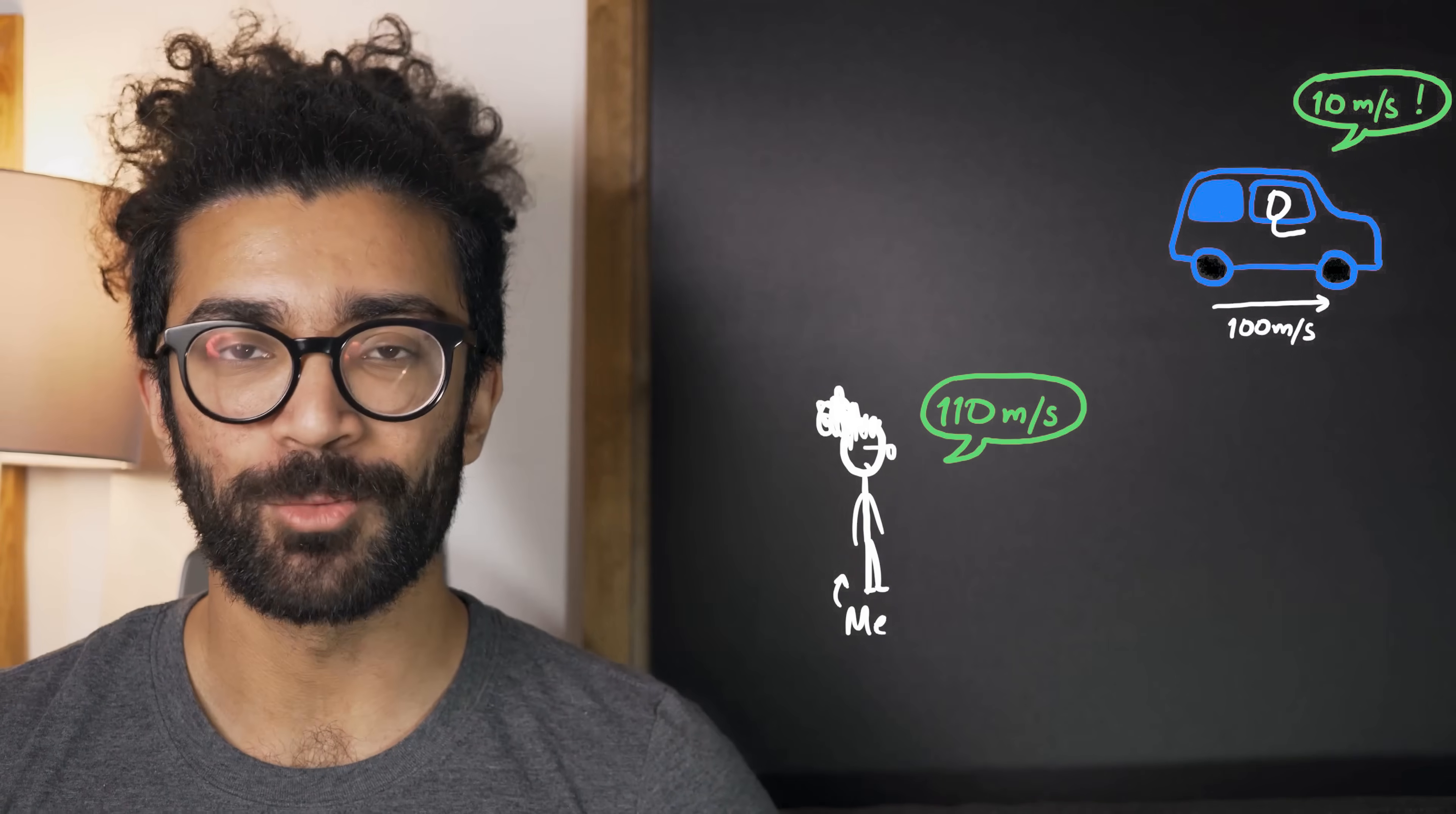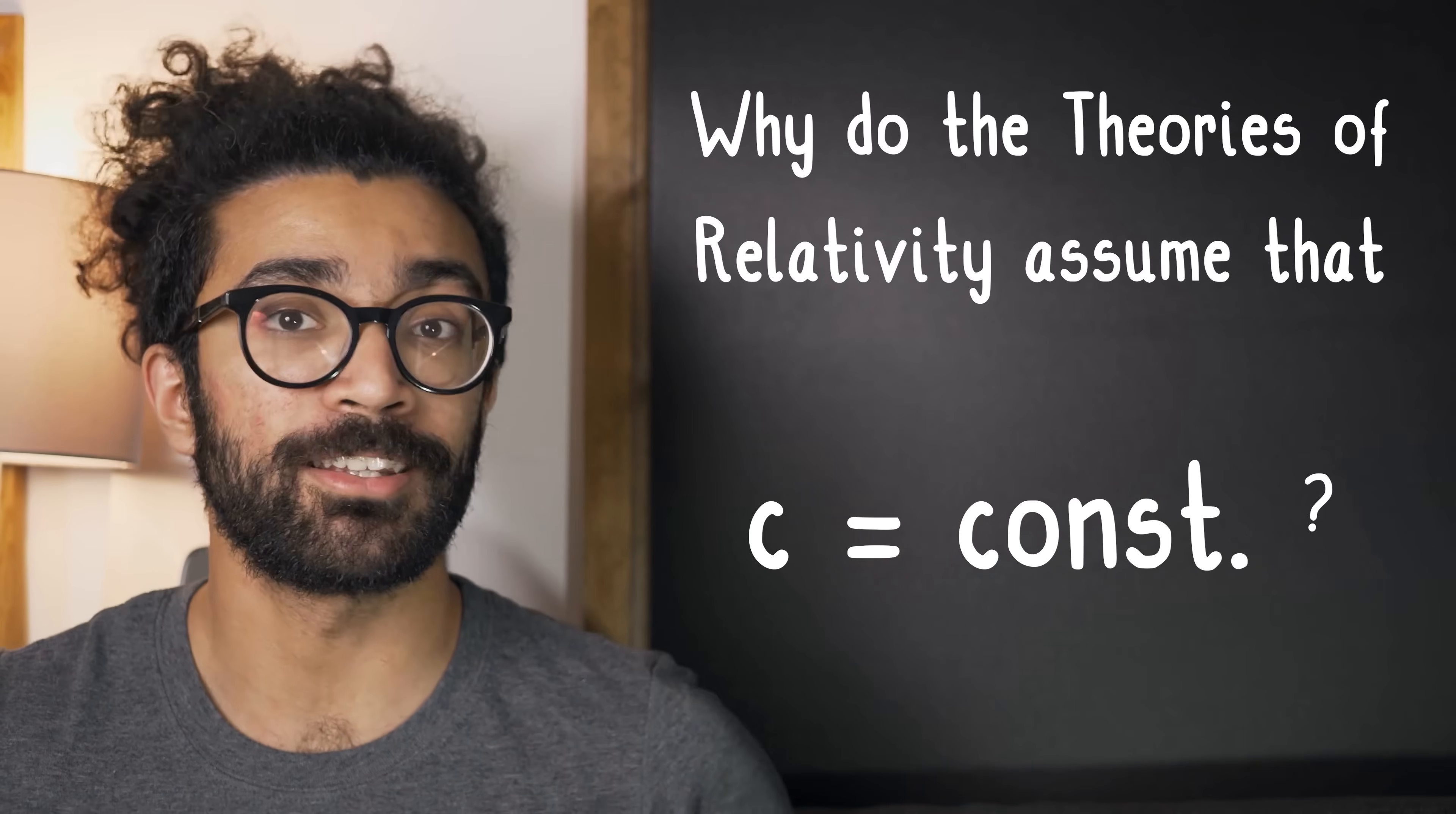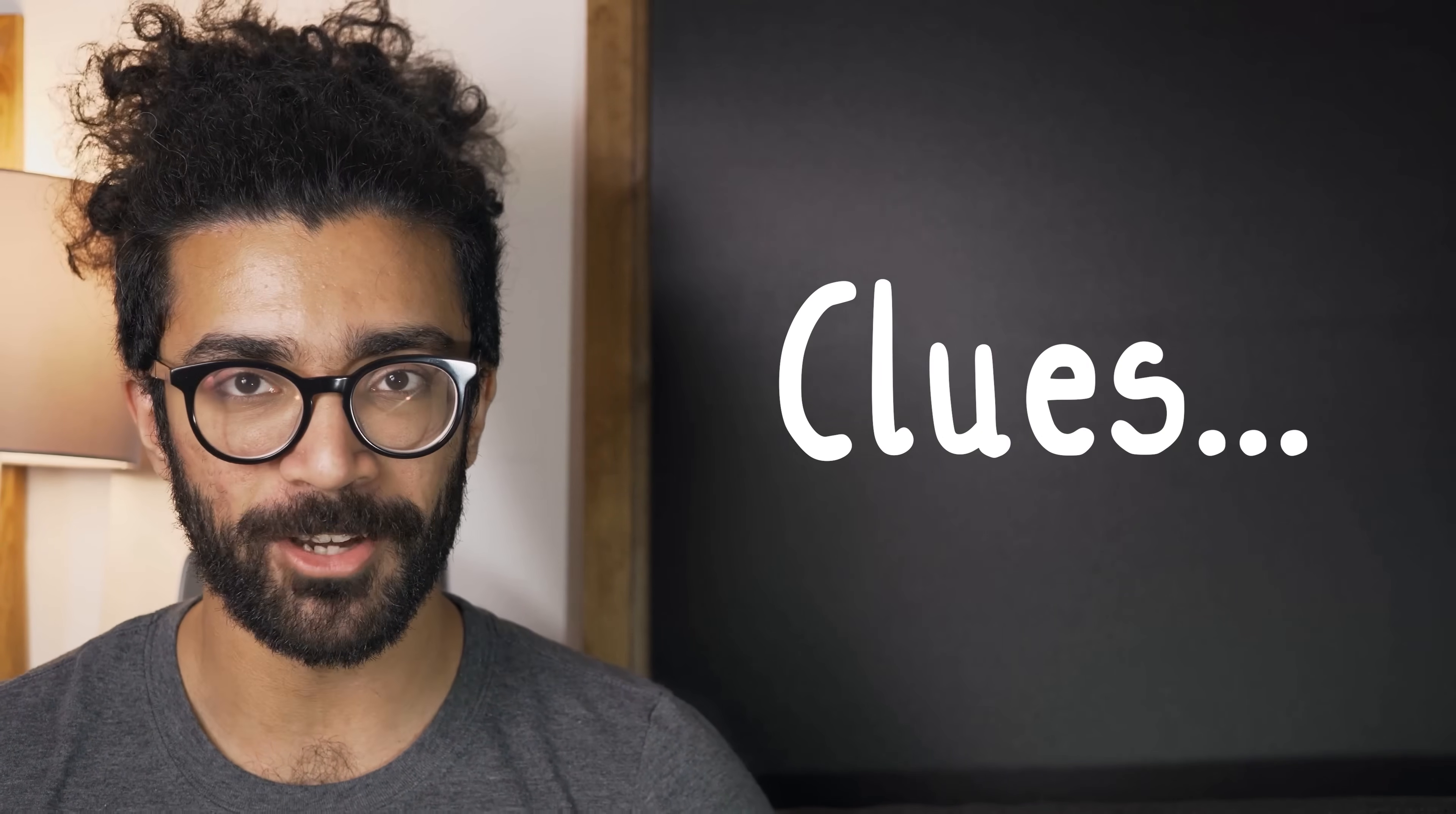But an interesting question we can ask is, why are the theories of relativity built on this weird assumption, which back then there was no way to confirm? Well, that's because there were clues pointing to this being the case, and we'll be looking at one of those clues in this video.